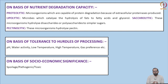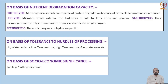One basic classification criteria for microorganisms is nutrition degradation capacity — what kind of nutrients they target. For example, proteolytic microorganisms are capable of protein degradation because they produce extracellular proteolytic enzymes, making them capable of utilizing protein sources available in food. These are called protein-loving or proteolytic microorganisms.